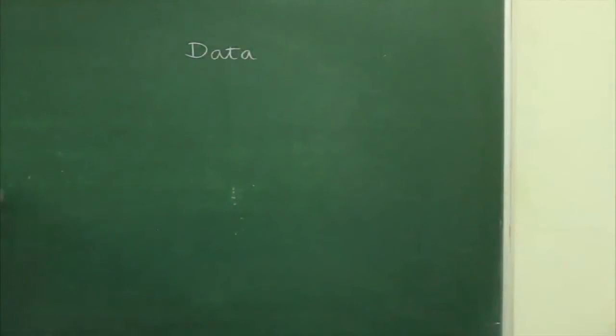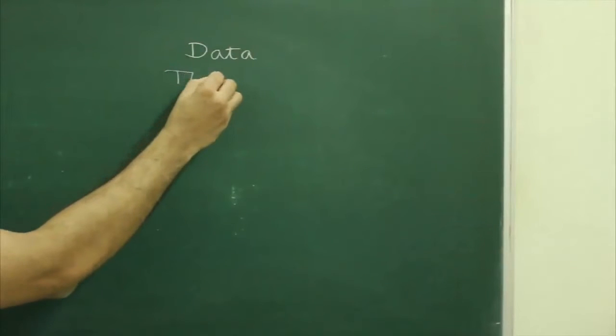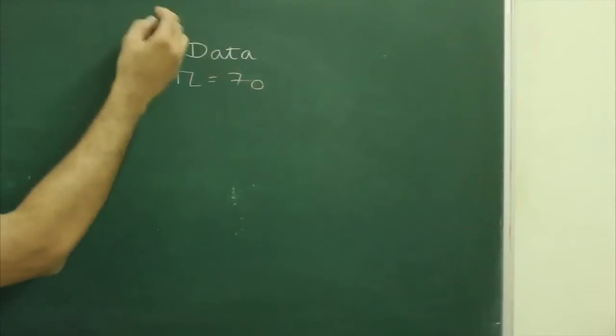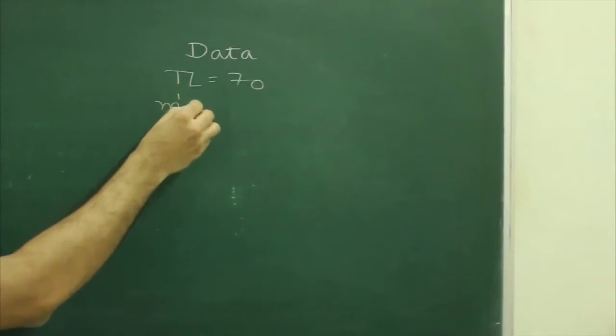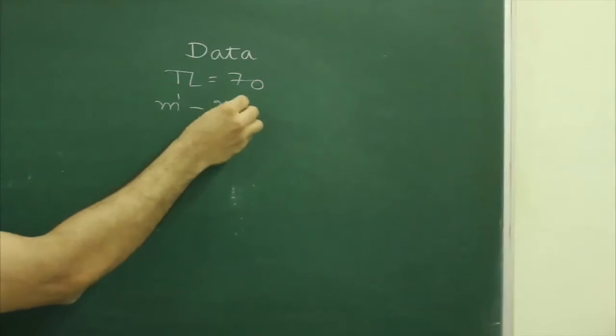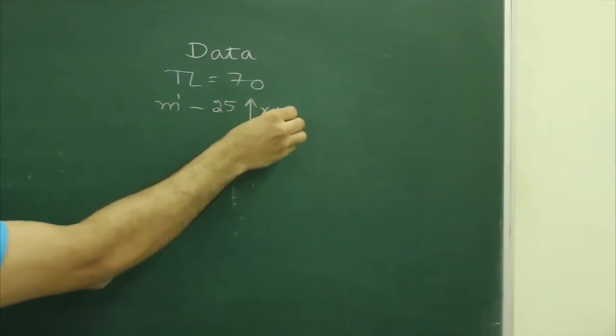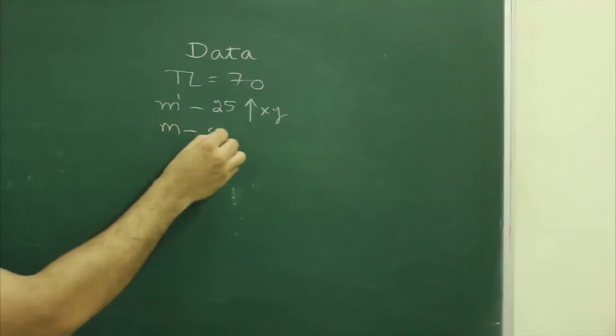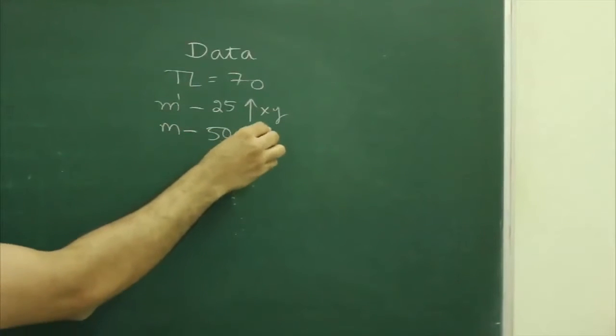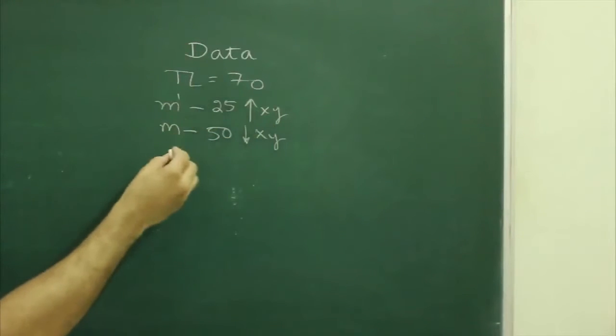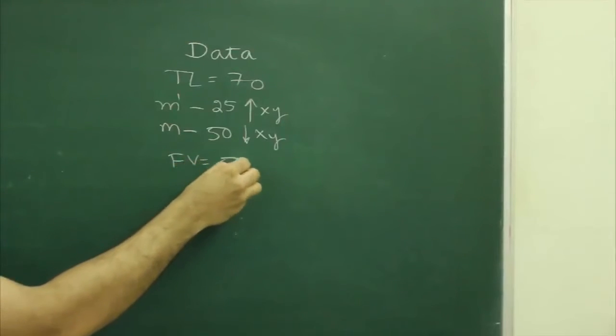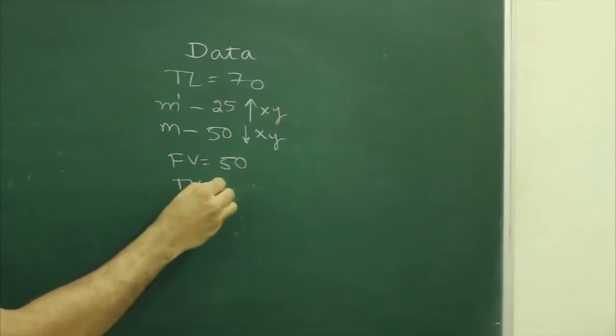Now we will write data. True length 70 mm, m dash 25 mm above xy line, m 50 mm below xy line, front view 50 mm, top view 60 mm.